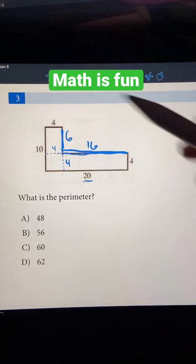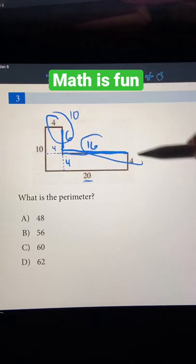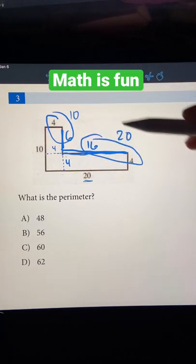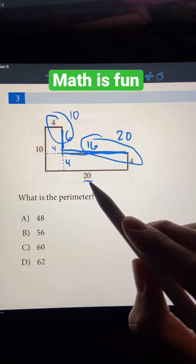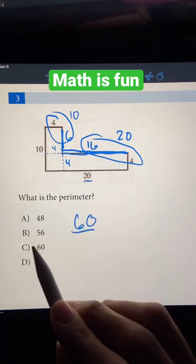So now we can just add up all the sides. So 4 plus 6, that's 10. 16 plus 4, that's 20. 10 plus 20 is 30. Plus 20 is 50. Plus 10 is 60. So the answer is C.